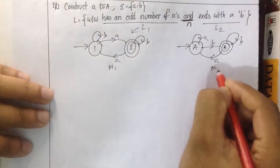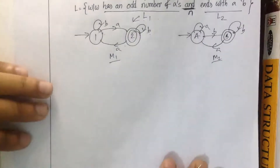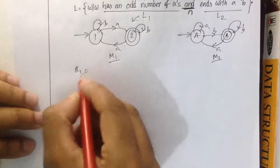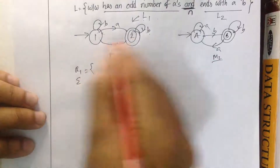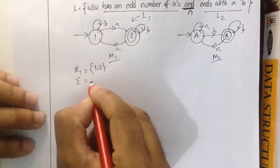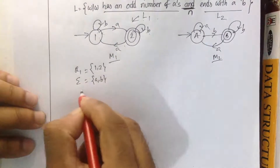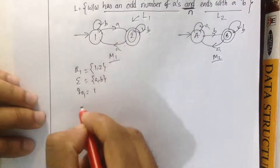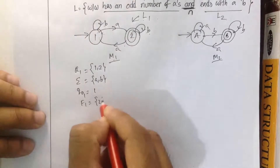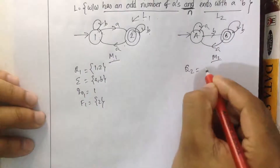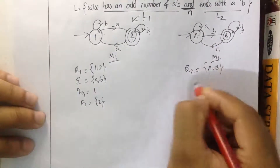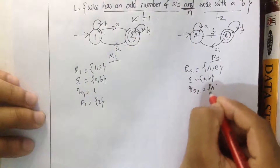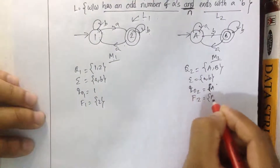M1 machine, M2 machine — formal definition of exactly the union. M1: Q1 is the set of states. Q2 is the set of states A and B, the alphabet is AB, the initial state is A, and the final state is B.